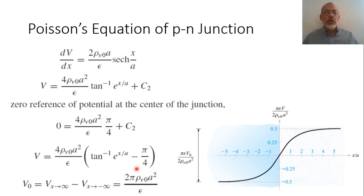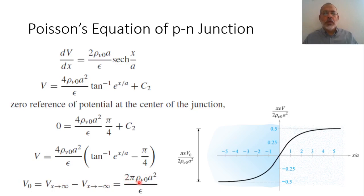The potential difference between the two limits — as x tends to positive infinity and x tends to negative infinity — which are the limits of the very long pieces of the PN junction, equals the potential V0. And V0 equals 2 * pi * rho_V0 * A² / epsilon. This potential difference is the barrier potential of the PN junction, which in the case of a silicon PN junction is 0.7 volts.